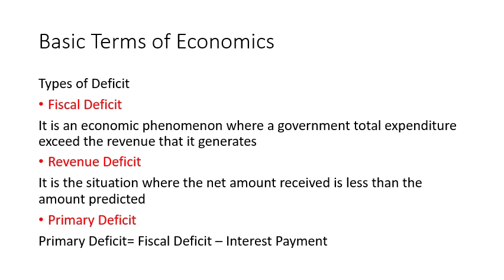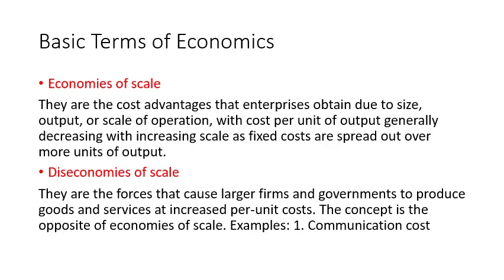Now we will look at the types of deficit. First is fiscal deficit — it is an economic phenomenon where a government's total expenditure exceeds the revenue it generates. Then we have revenue deficit — it is the situation where the net amount received is less than the amount predicted. Then we have primary deficit — primary deficit equals fiscal deficit minus interest payment.